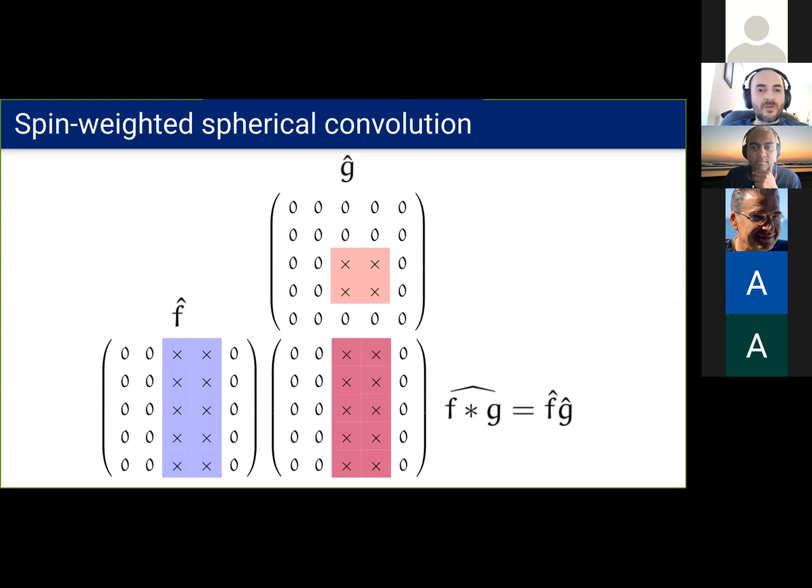Now recall the standard spherical convolution where we have effectively only one filter coefficient per degree. With the spin-weighted functions, we have multiple spins which are related to different columns. Now we use this observation to define the spin-weighted convolution. In this example, we have spin-weight zero and one. This results in more expressive filters with four filter coefficients per degree.